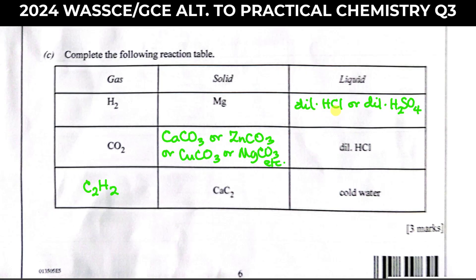The second row gives the liquid as dilute hydrochloric acid and the gas produced as carbon dioxide. Which solid reacts with dilute acid to produce CO₂? That solid must be a trioxocarbonate — it can be calcium trioxocarbonate, zinc trioxocarbonate, sodium trioxocarbonate, copper(II) trioxocarbonate, or magnesium trioxocarbonate as the case may be. So it must be a trioxocarbonate — that's very straightforward.